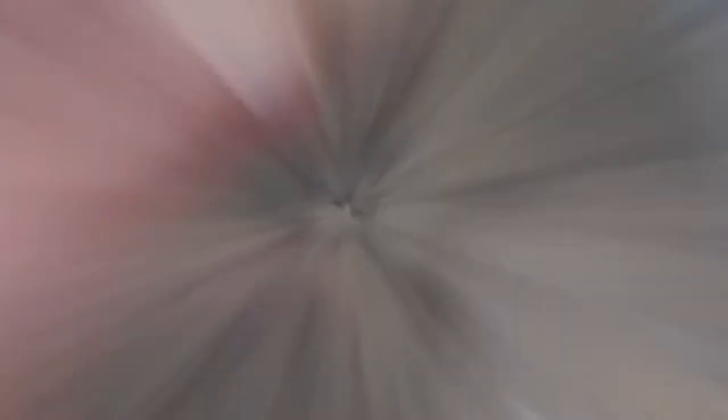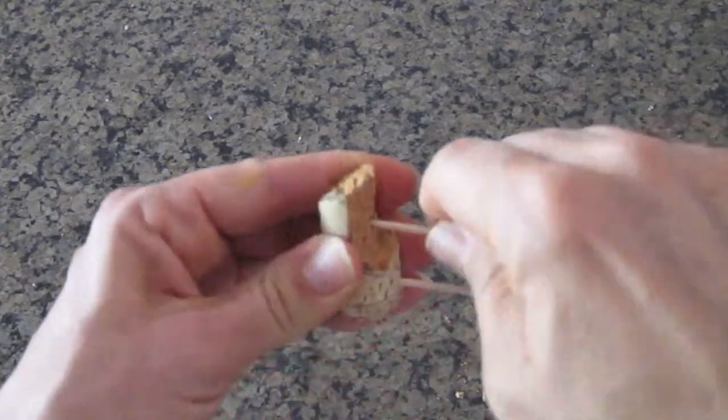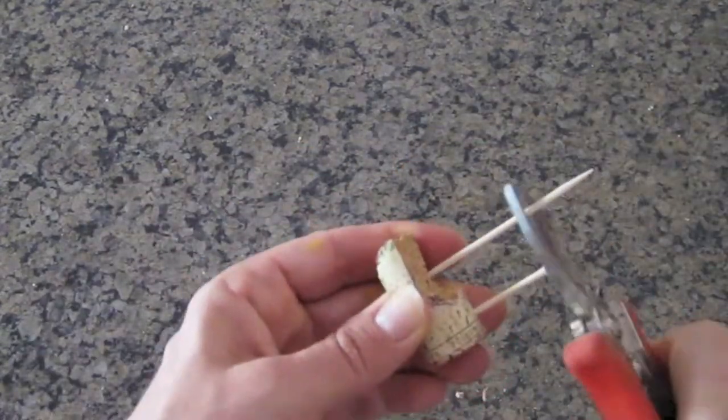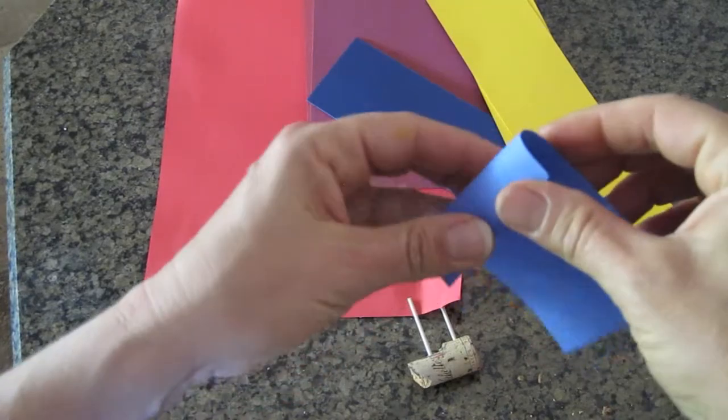Then I carved it out with a sharp blade, cut the front bow at an angle, and added toothpicks to hold the sails. Grab some colorful paper, and when you find your color, just make a fold.